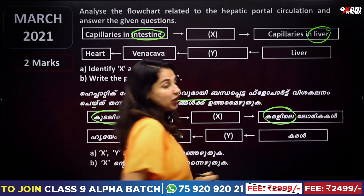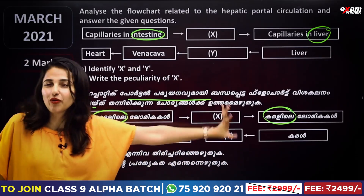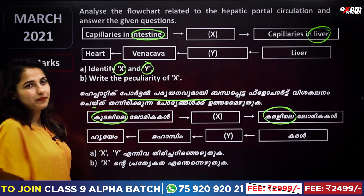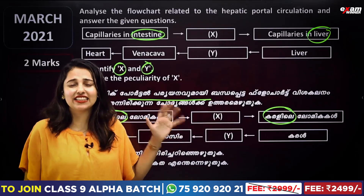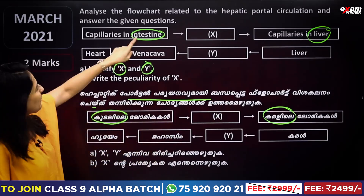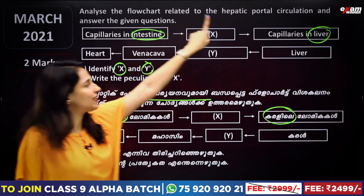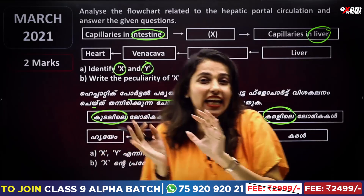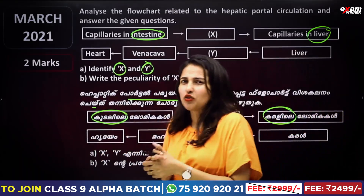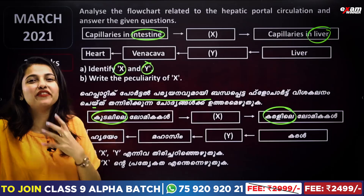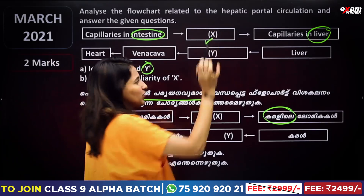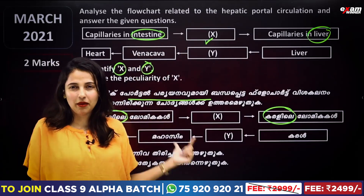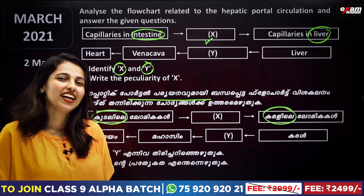If we have a hepatic portal, we will talk about the flowchart. Then answer the question — identify X and Y. If you start with the intestine, we will get to the liver. How does that blood capillary or blood vessel affect X? We can take it as a liver.